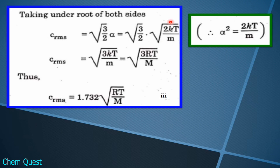The factor of 2 in the numerator and denominator cancels, giving c_rms = √(3kT/m) for one molecule. For one mole of gas, k is replaced by R, so the root mean square velocity becomes c_rms = √(3RT/M). Taking √3 ≈ 1.732, this can also be written as 1.732 × √(RT/M). This is equation 3, representing the root mean square velocity.